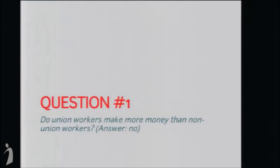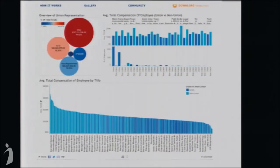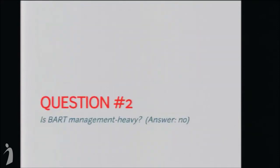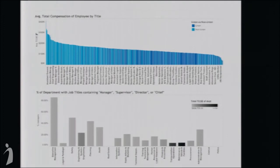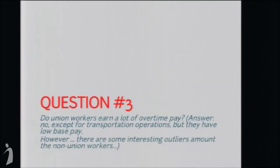She starts with well-formed questions. The first question was: do union workers make more money than non-union workers, like a lot of people were claiming? She actually found the answer was no. She made a very nice dashboard where one color of blue represents union workers and the other non-union, sorted by salary range. She found the non-union workers — shown in cyan — are actually making a lot more money. This led her to another hypothesis: is BART management heavy? That answer was also no — most people were rank and file workers.